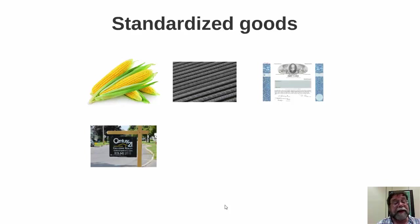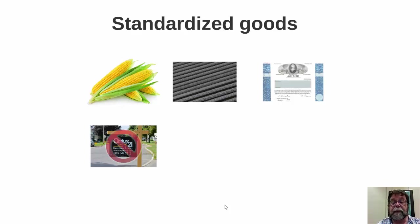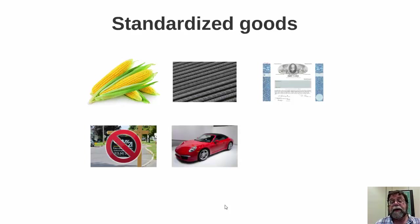In most markets, goods are actually differentiated. The rental real estate market is one where the product is differentiated — there's a big difference between living in a trailer and living in a mansion. The market for cars is also not standardized; each model has many variations with different features and characteristics, and there's a big difference between driving a sports car and driving a minivan.